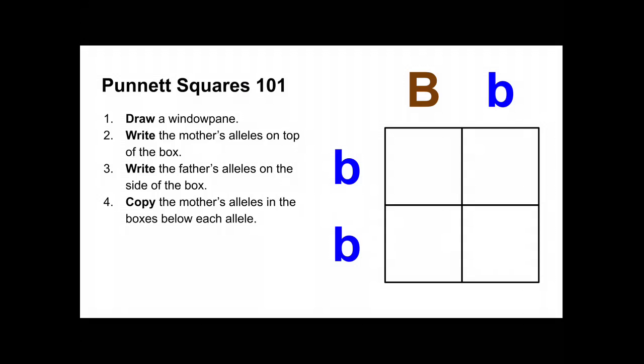Next, we're gonna copy the mother's alleles into the boxes below each of her alleles. So that looks like this. We'll take a big B and a big B and drop them down, and then a little b and a little b and drop those down.